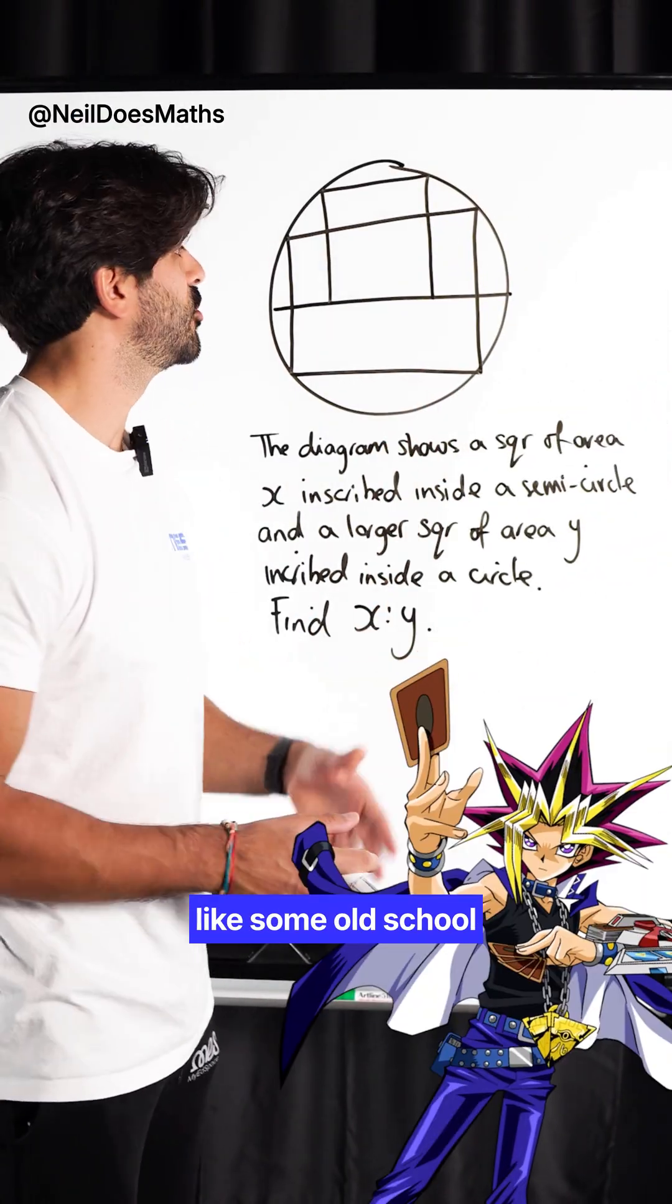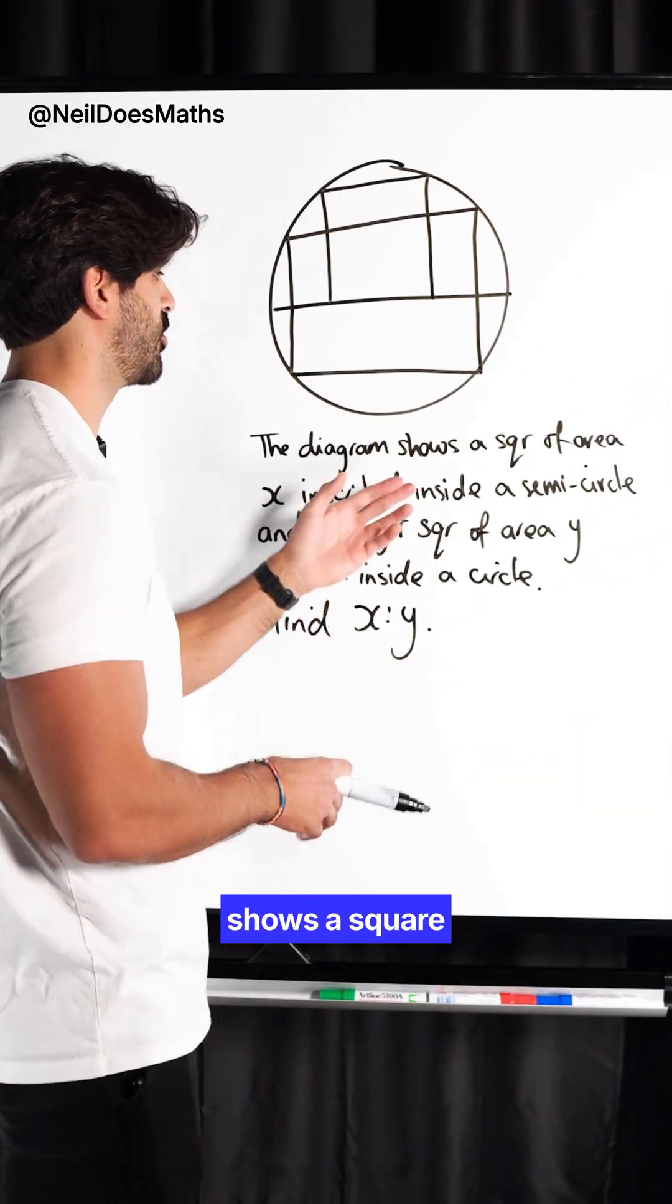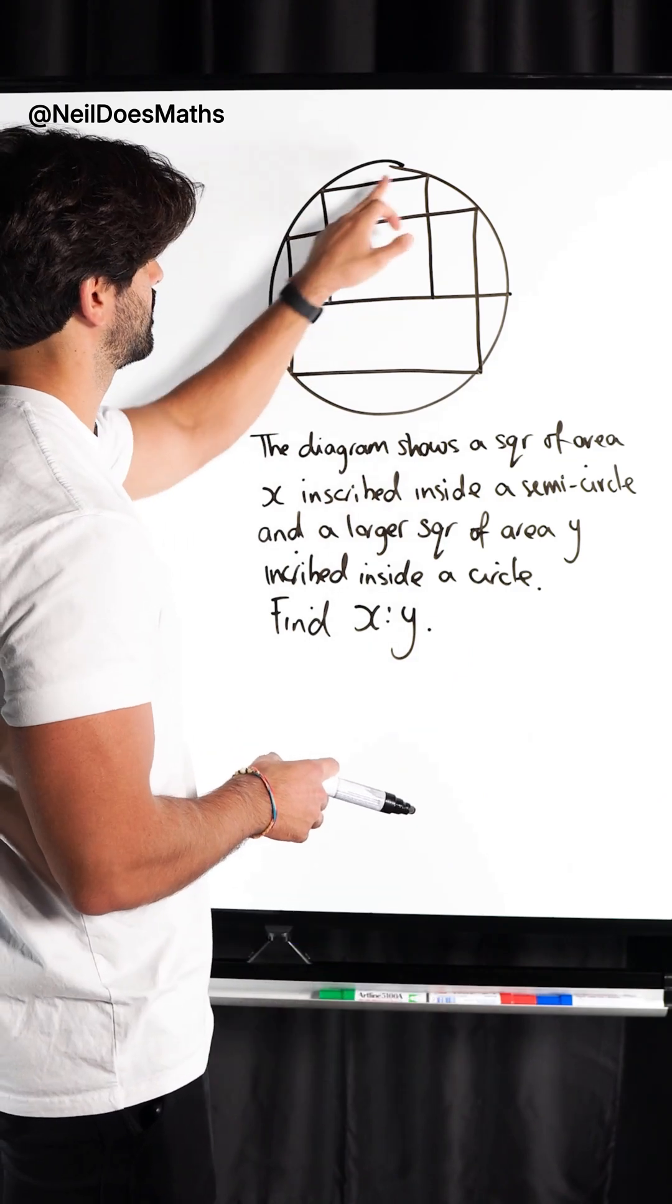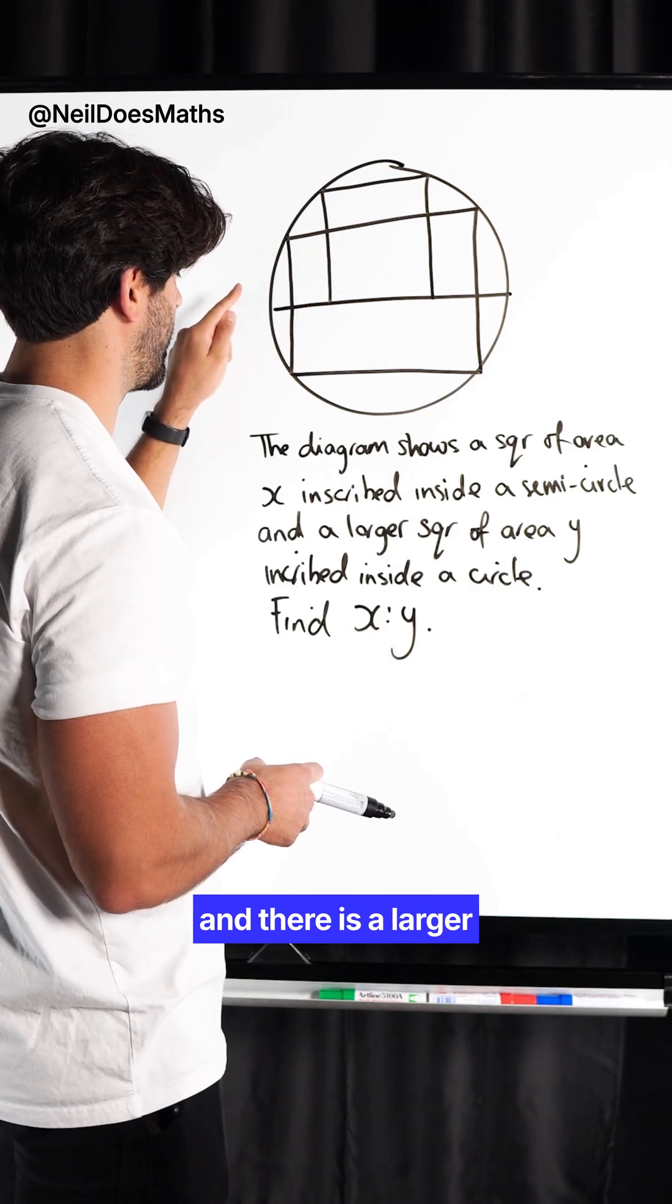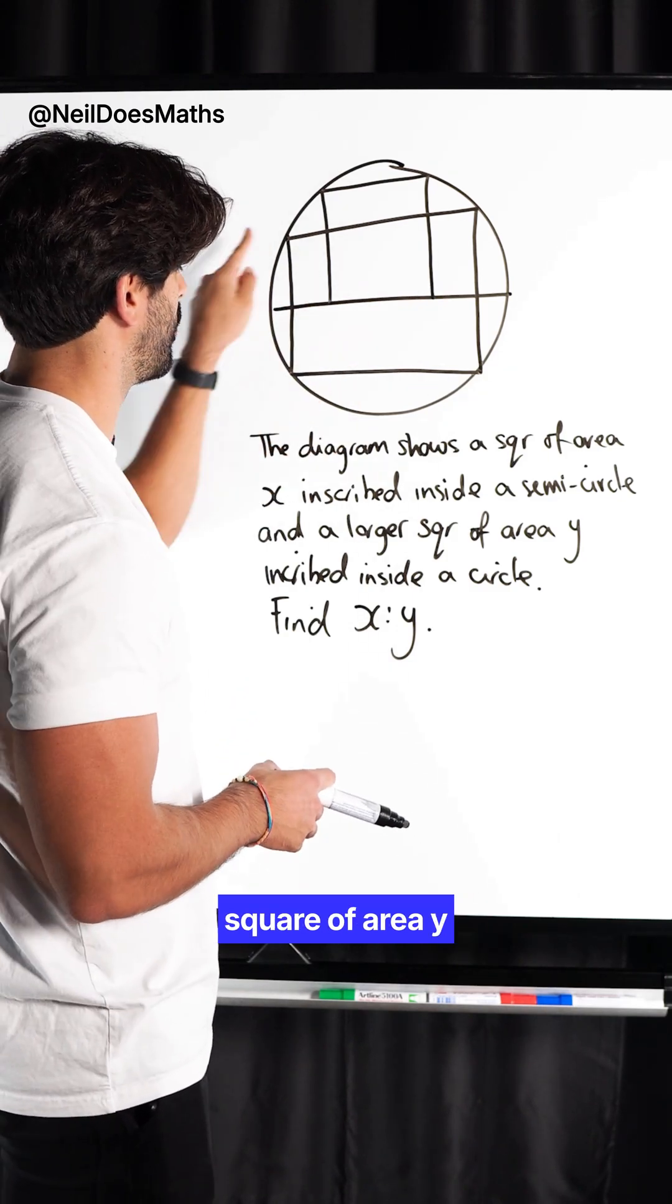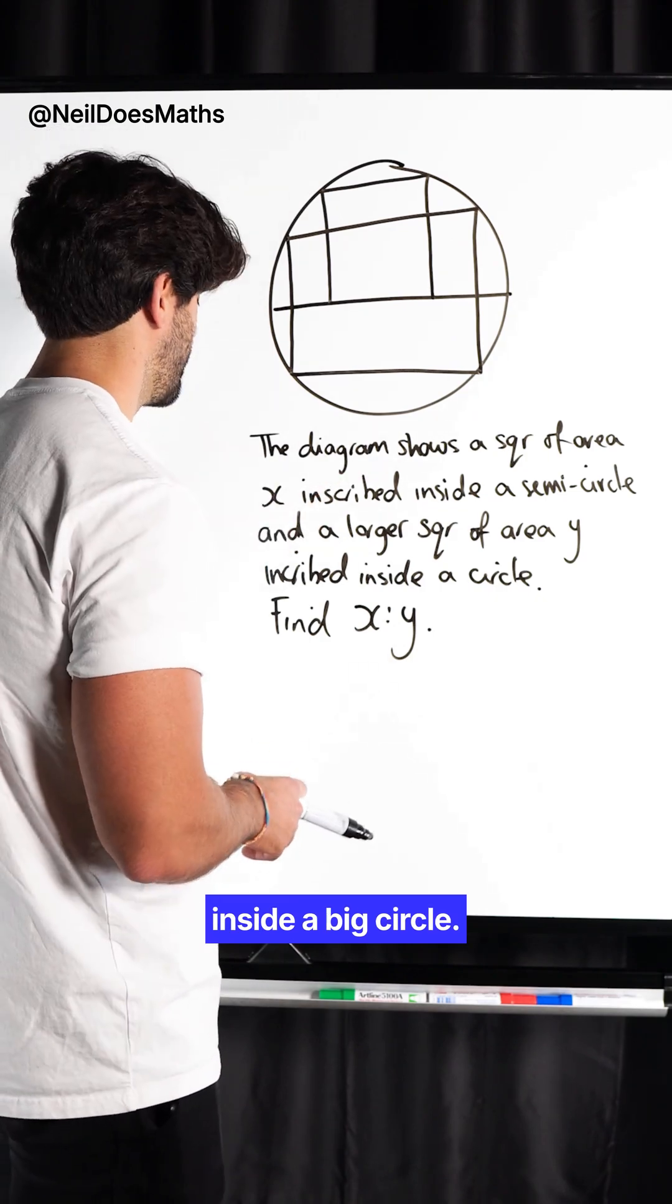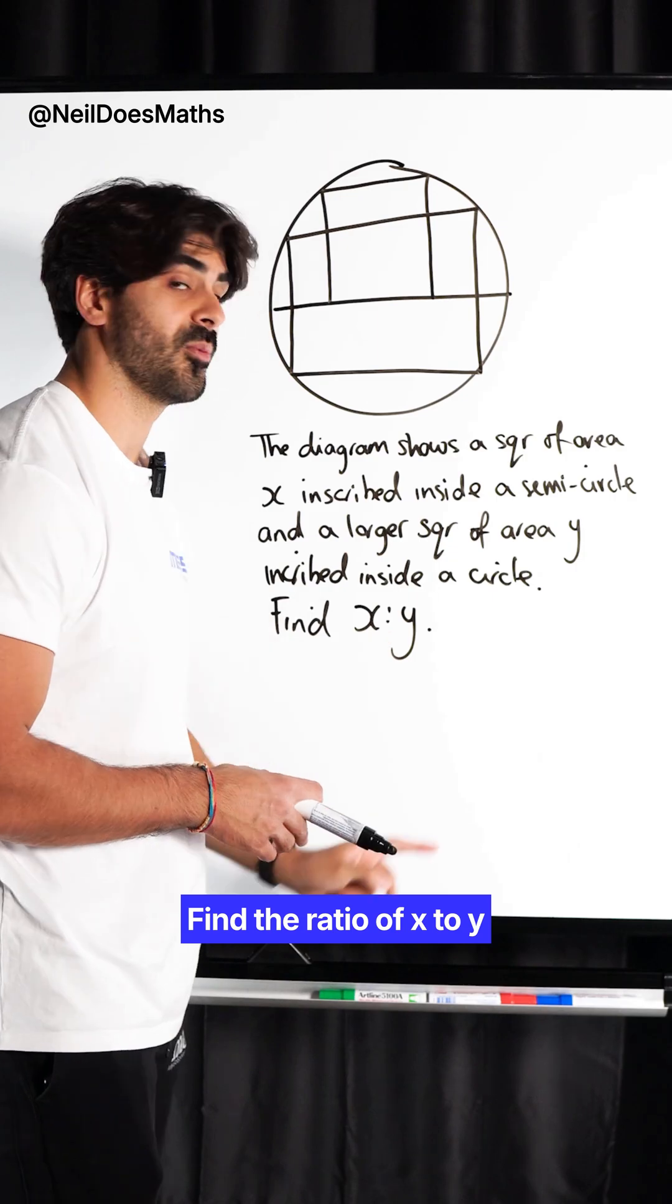This diagram, which looks like some old-school Yu-Gi-Oh type relic, shows a square of area X inscribed inside a semicircle, and there is a larger square of area Y inside a big circle. Find the ratio of X to Y.